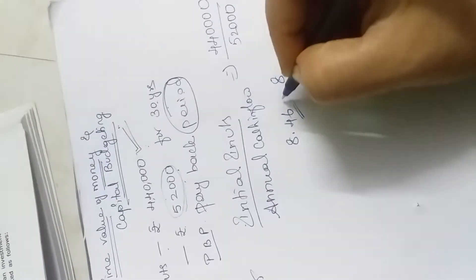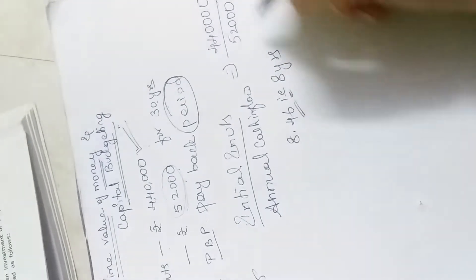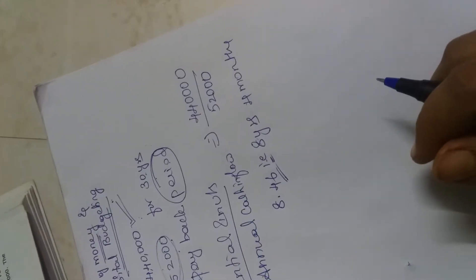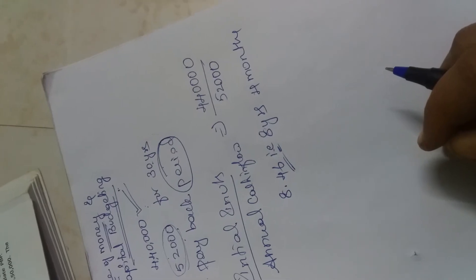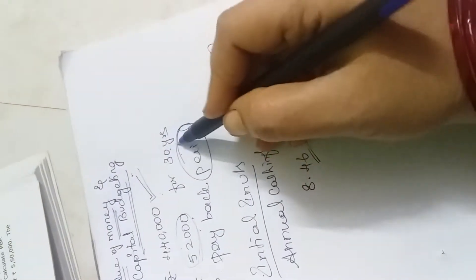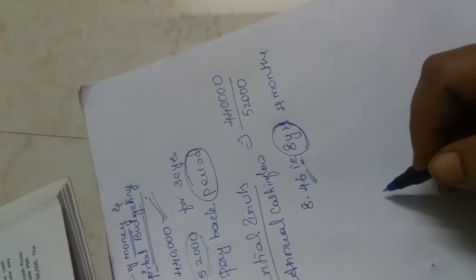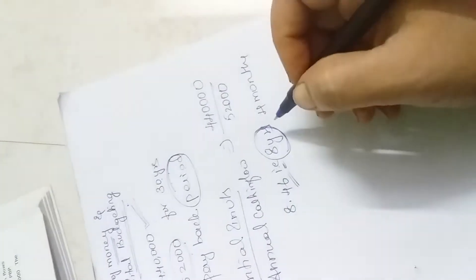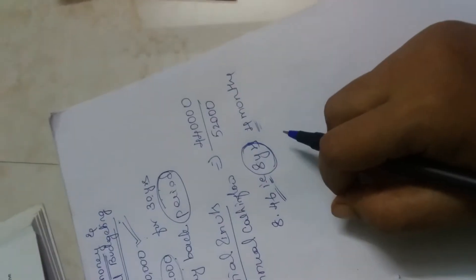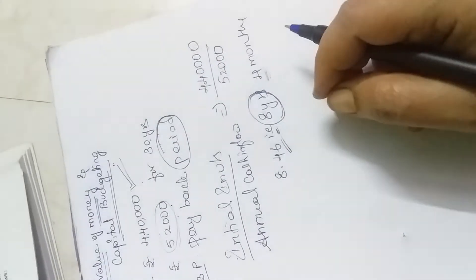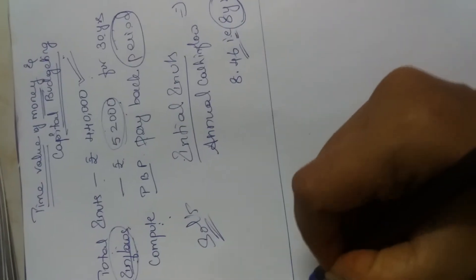The answer is 8.46, which we read as 8 years 4 months. This is very good for the project because out of 30 years, my investment will be back in just 8 years. The balance of roughly 21 years is profit, meaning this project is going to fetch a good amount of profits.